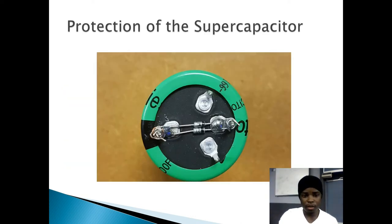Protection of the super capacitor. To protect the super capacitor to 2.4 volts, Zener diodes were connected parallel to the positive and negative terminals of the super capacitor.